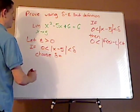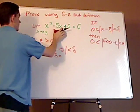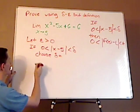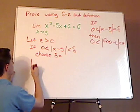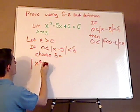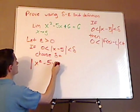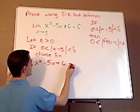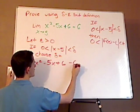So, you want to start with this statement right here. So, you have the absolute value of x squared minus 5x plus 6 minus L, which is your limit, which is 6.